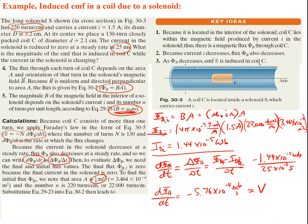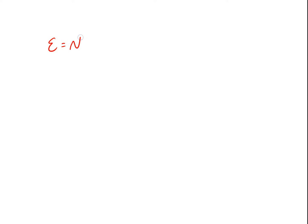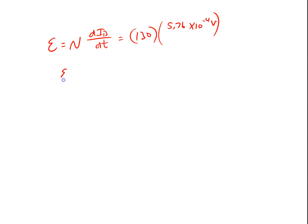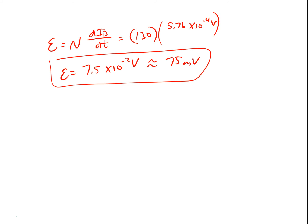Finally, the induced EMF in coil C is EMF = N · |dΦ/dt| = 130 turns × 5.76 × 10⁻⁴ V = 7.5 × 10⁻² volts, or approximately 75 millivolts. That's it for this lecture — we'll pick it up next time.